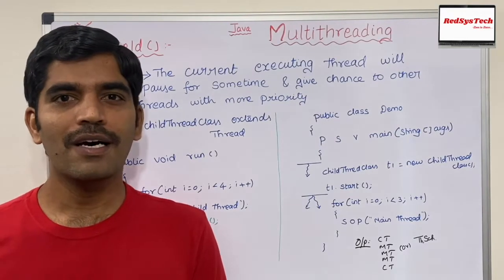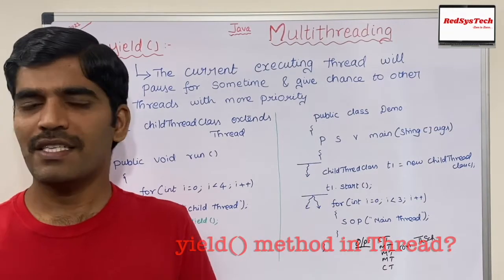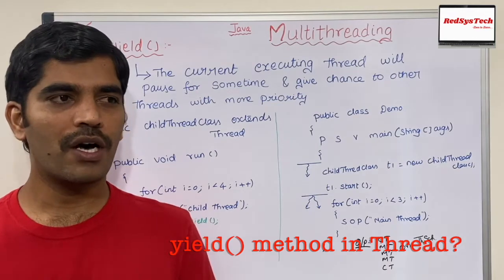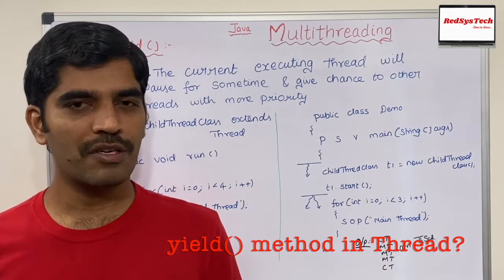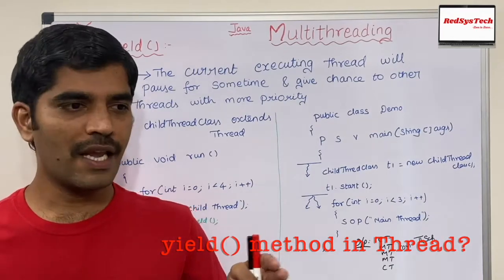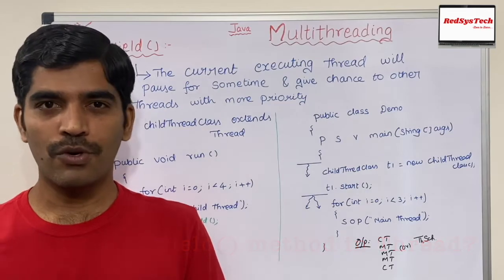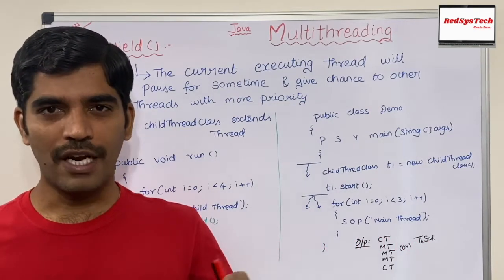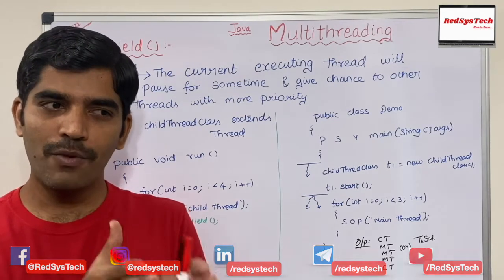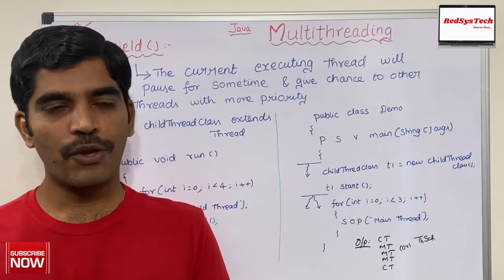Before we start with what yield method is, I want to start with a simple real-time example so you guys will remember it whenever someone asks. Let's say you are going to a grocery store, getting some items, and there are 10 counters but all the counters are closed because you're going at the last minute before the store closes.